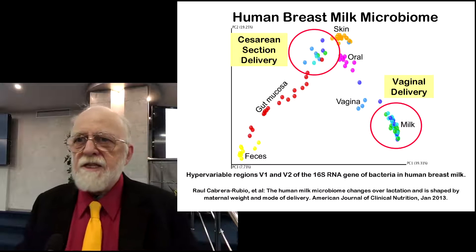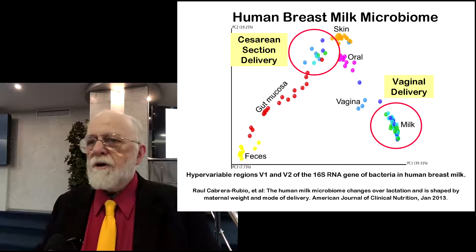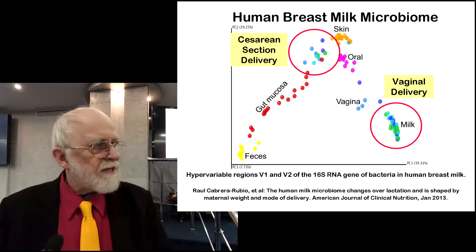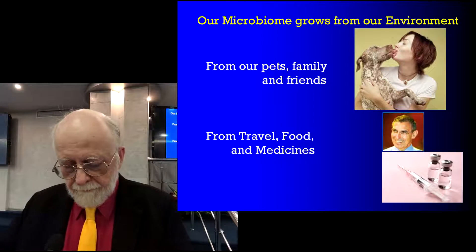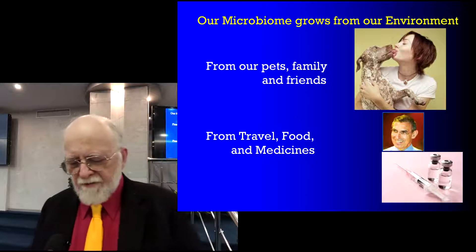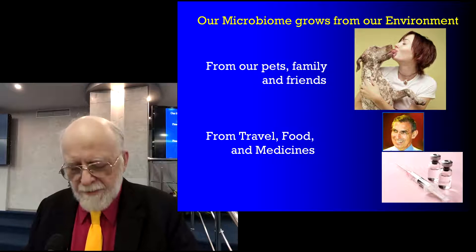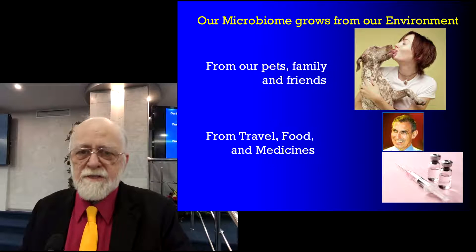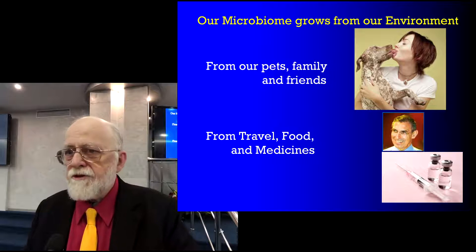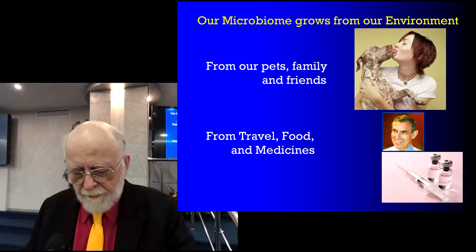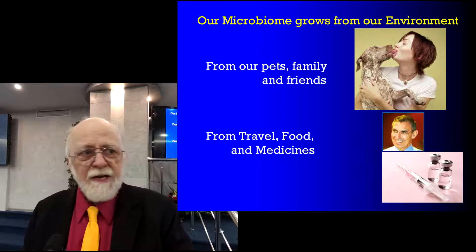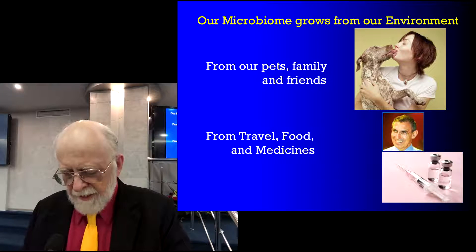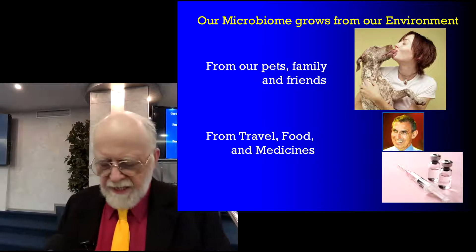There are all of these environmental factors that work together to select our microbiome as we move through life. Our microbiome also grows from our environment — we get microbes from our pets, from our family, and our friends. Most of the change in microbes for a baby was due to the surrounding family. We also get them from travel, food, and medicine. Yehuda Schoenfeld has been highlighting recently the vaccine issues.